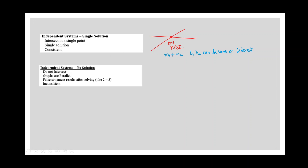We also have an inconsistent system, where you have two parallel lines that would never intersect. This happens when the slopes of the two lines are equal but the y-intercepts are not.